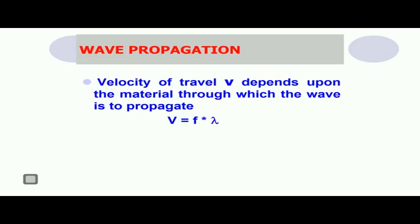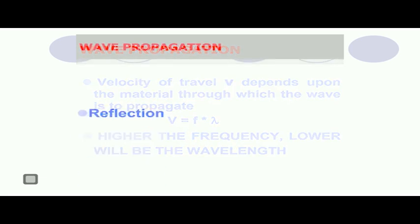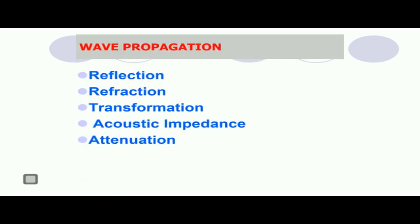Let us understand how the wave propagates and the various elements behind it. The velocity of travel of a wave depends upon the material through which it is propagating, and V is given as the product of frequency and wavelength. From this equation, we can see that higher the frequency, lower will be the wavelength, because the velocity is constant. Various phenomena encountered when a wave propagates through a medium include reflection, refraction, transformation, acoustic impedance, and attenuation.